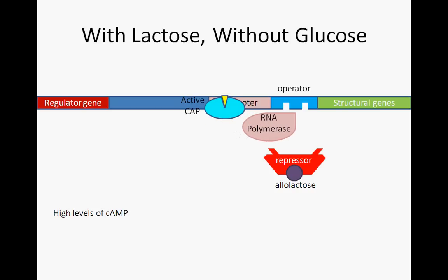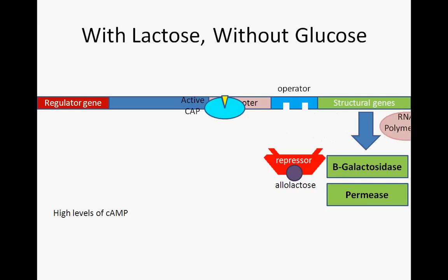Therefore, CAP is active and the lac operon transcribed efficiently only when lactose is present and more favorable energy sources are absent. This mechanism for gene expression control ensures that cells do not waste energy making proteins that will not be used. The operon system enables a prokaryotic cell to tailor its gene expression to the specific needs as dictated by its immediate environment.